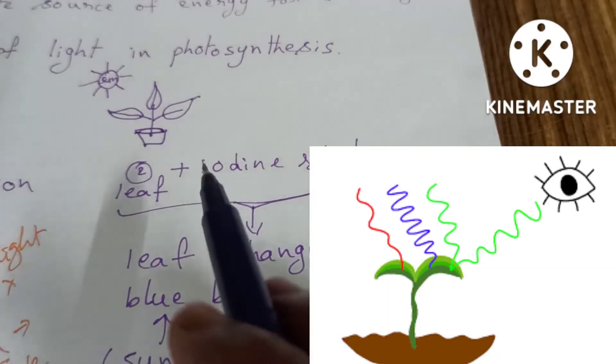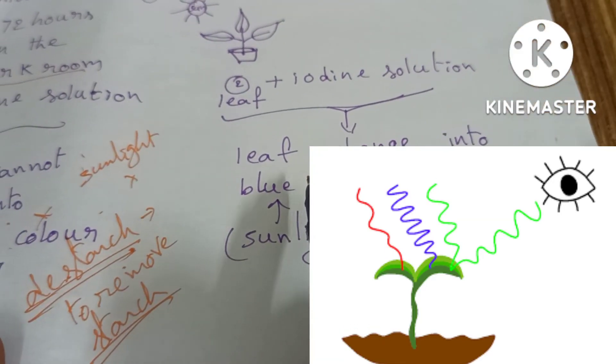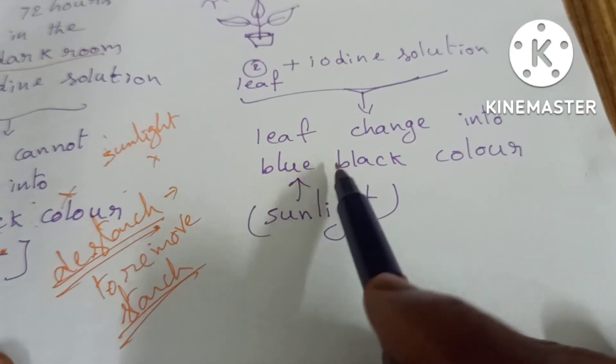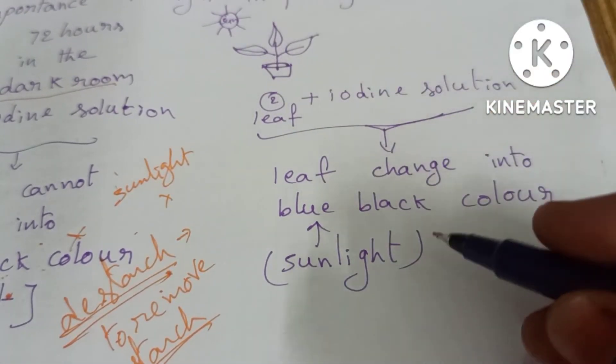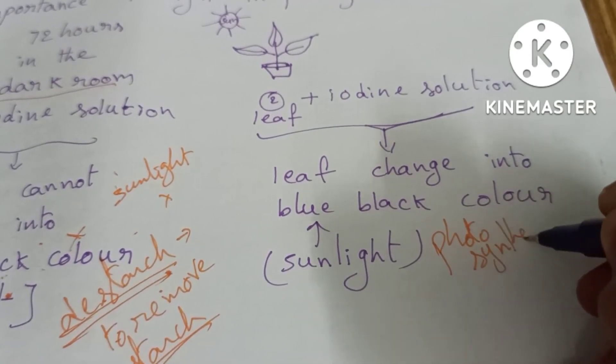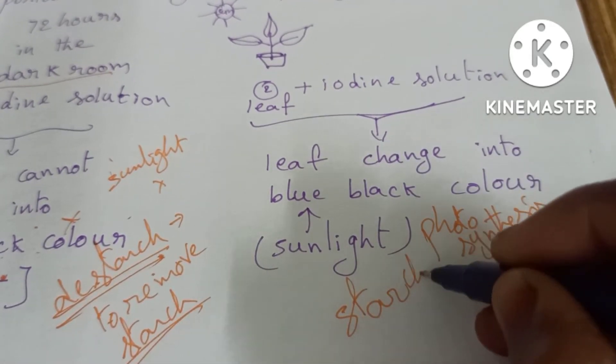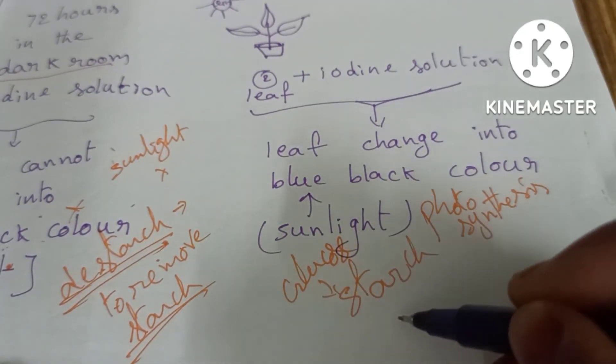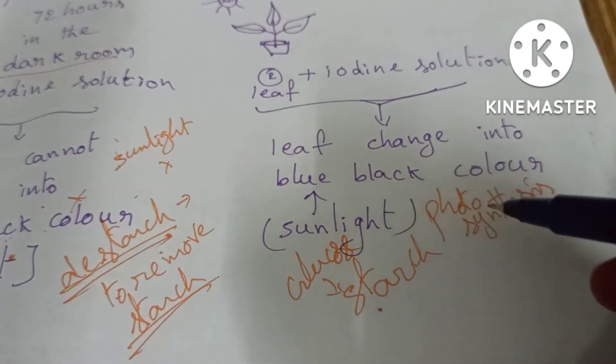The second leaf will change into blue-black color. Why? Because we kept it in sunlight. It can do photosynthesis. Photosynthesis occurs, it forms glucose and converts into starch molecules. This is the carbohydrate test result: blue-black color.